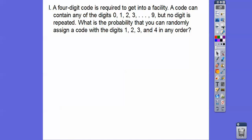All right, so a four-digit code is required to get into a faculty room right there, sorry, so just pretend it says faculty room. A code can contain any of the digits 0, 1, 2, 3, 4, 5, 6, 7, 8, or 9, so there's 10 digits there, but no digit is repeated. What's the probability? You remember probability from yesterday's lesson, favorable divided by total. What's the probability that you can randomly assign a code with the digits 1, 2, 3, and 4 in any order? Okay, well, we first got to find out what the total is, and then we'll find out what the favorable is, and then we'll put it in fraction form, okay?